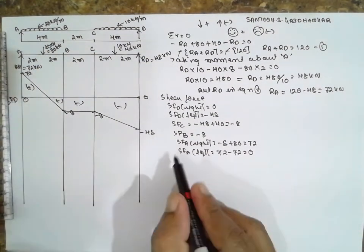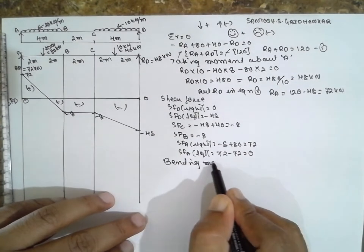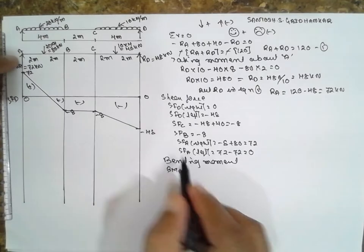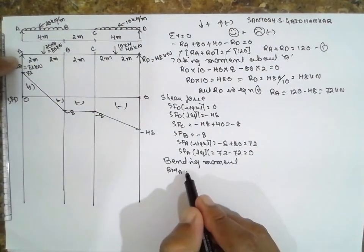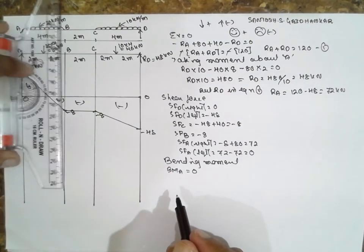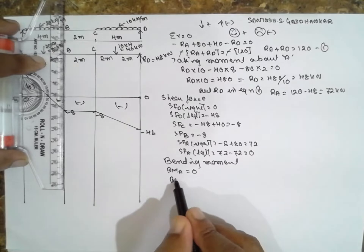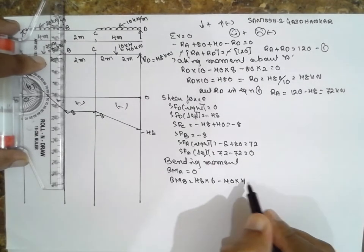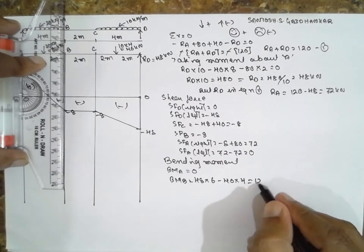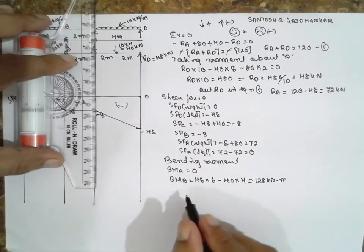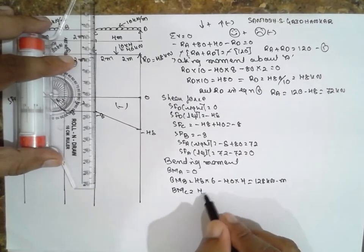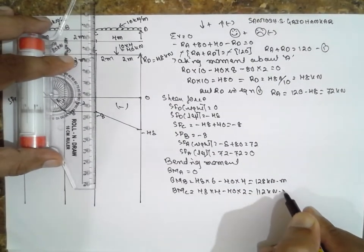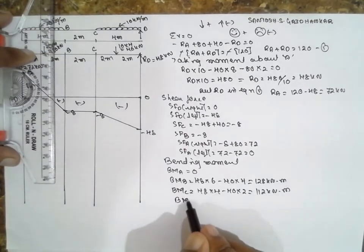Now bending moment diagram. Bending moment at A: if both ends are fixed, therefore the first value will be 0 here. The bending moment at B: 48 into 6 minus 40 into 4, value is 128 kNm. Bending moment at C: 48 into 4 minus 40 into 2 equals 112 kNm, and bending moment at D will be 0.